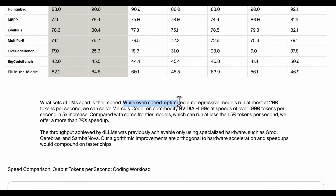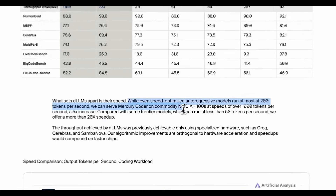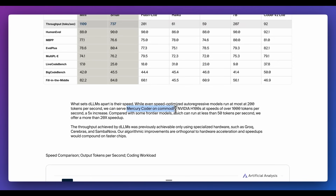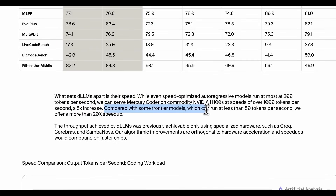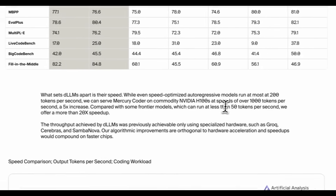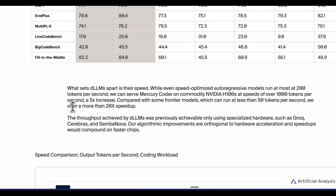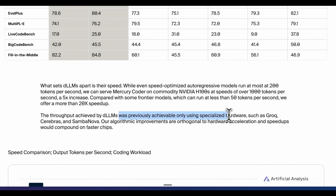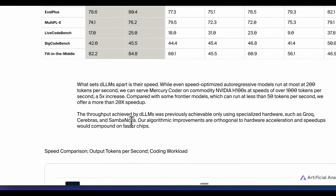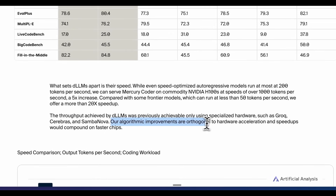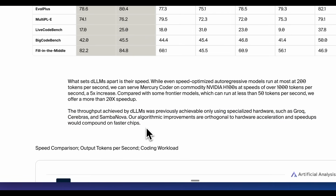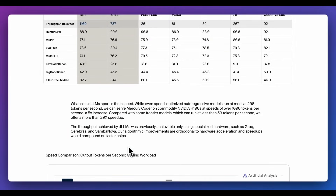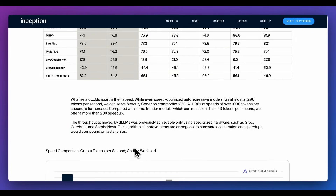Even speed-optimized auto-regressive models only run at most 200 tokens per second, whereas Mercury Coder on a commodity NVIDIA H100 can run over a thousand tokens per second — a 5x increase. Compared to frontier models running under 50 tokens per second, this is a 20x speed-up. Previously the only way to get these speeds was through specialized hardware such as Groq, Cerebras, and SambaNova. Their algorithmic improvements are orthogonal to hardware acceleration, so speed-ups would compound on faster chips like NVIDIA's latest Blackwell.